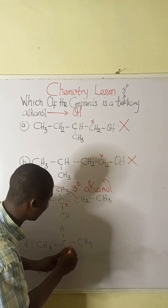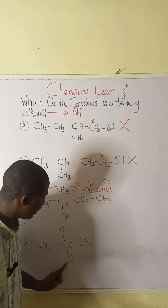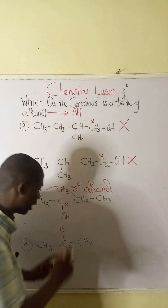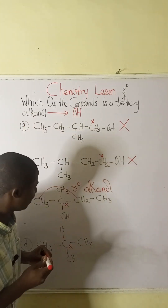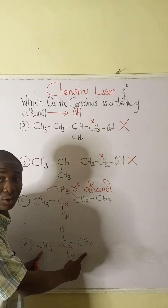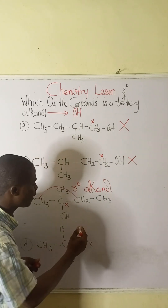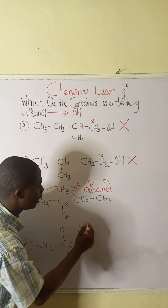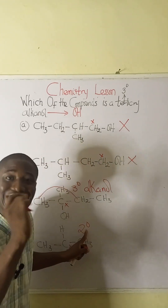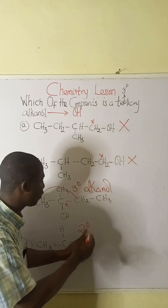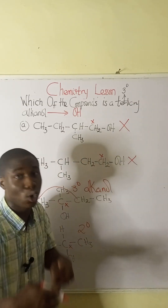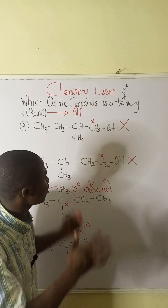Let's also check option D. The carbon bearing the OH is an alkanol, but you can see it is directly attached to only two carbon atoms. So this particular compound is a secondary alkanol, not a tertiary one.